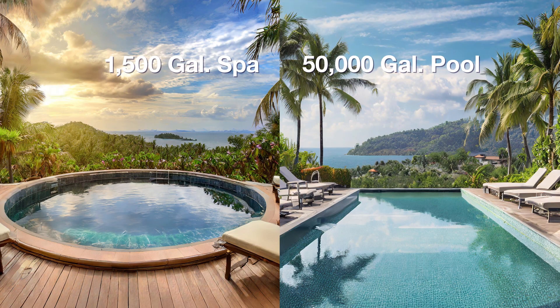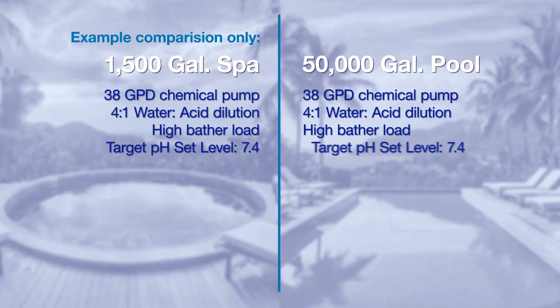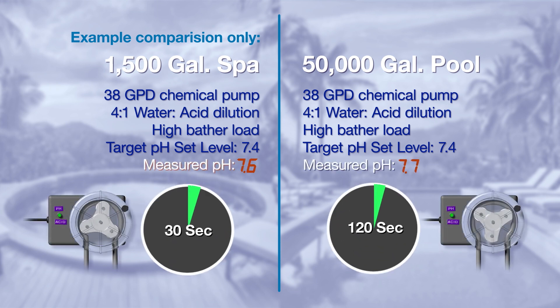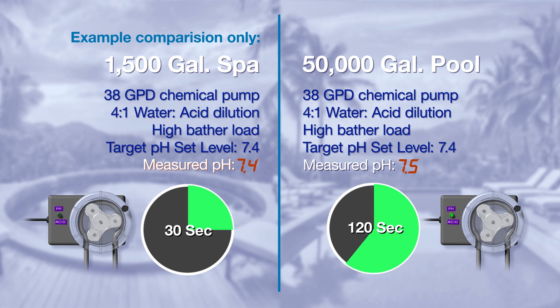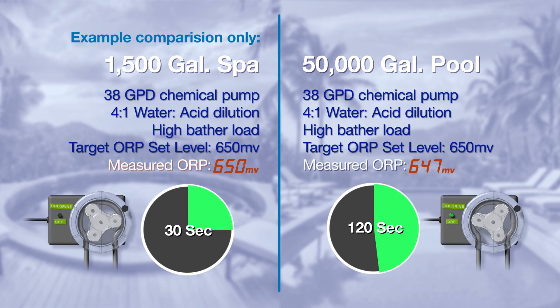In a 1,500-gallon spa, the pH set level may be at 7.4, and the dose time may be at 30 seconds to maintain the 7.4 set level. However, a 50,000-gallon pool may need a 120-second dose time to maintain the 7.4 pH level. In the ORP mode, the set level and dose time are dependent on the same pool parameters as in the pH mode.